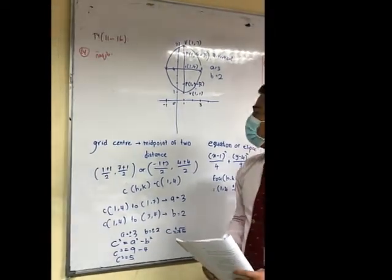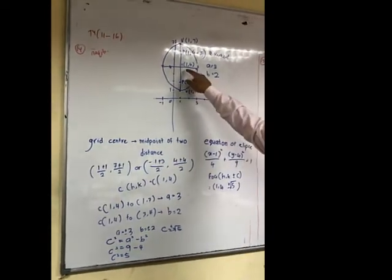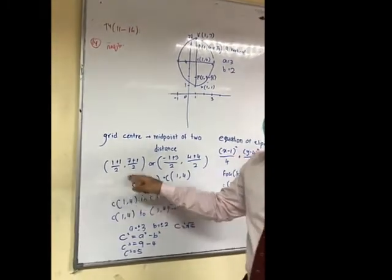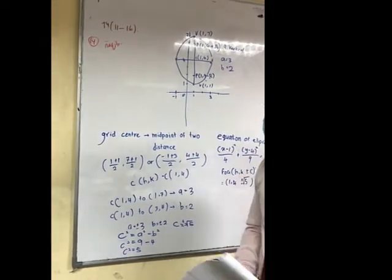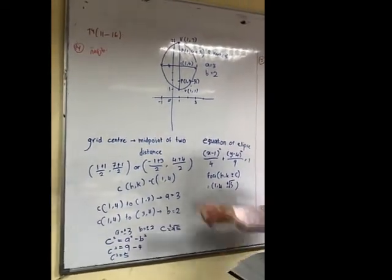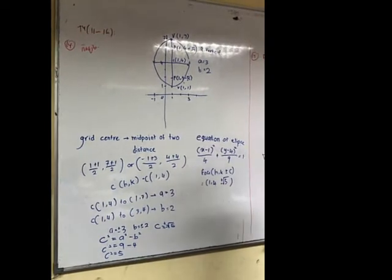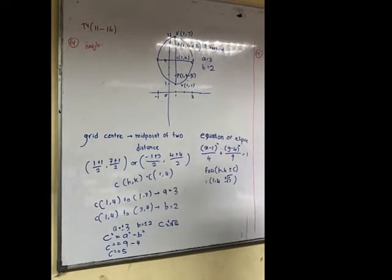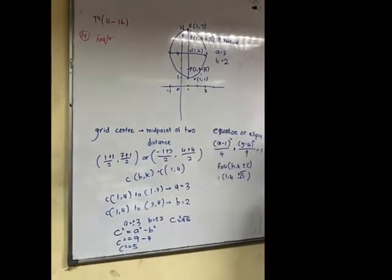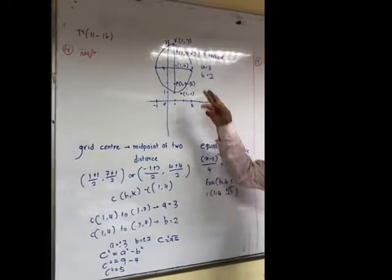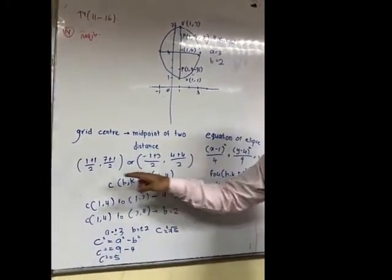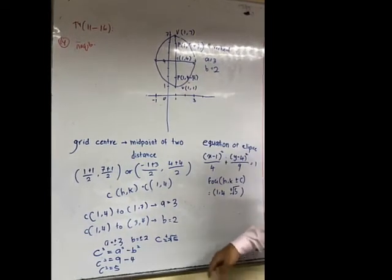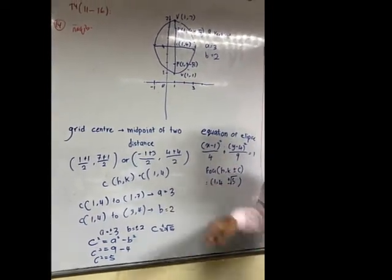Then we want to find the center point. So center, we use midpoint. (1 + 1)/2 and (7 + 1)/2, or we take two other points (-1 + 3)/2 and (4 + 4)/2. We get the center, the value is the same. We get center (1, 4), the midpoint of the 4 points.